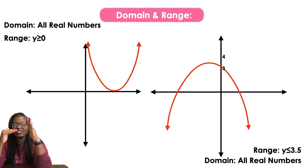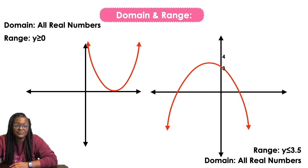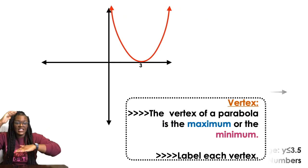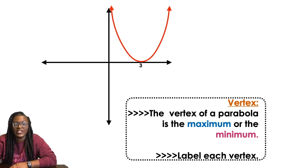And because it's going down, you say less than or equal to. So that's domain and range. You always want to know what your x values are, how wide the graph is, and then how tall the graph is for your range.